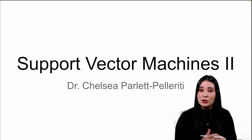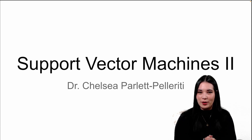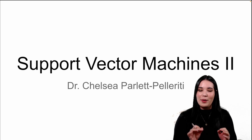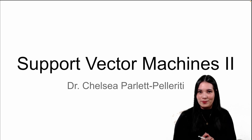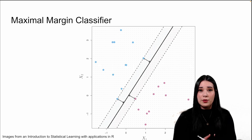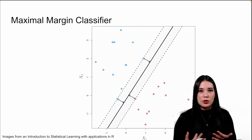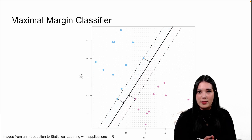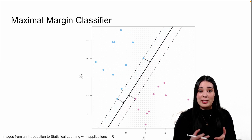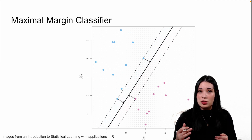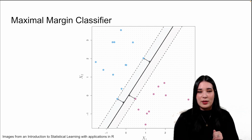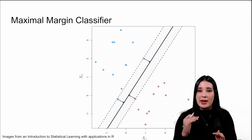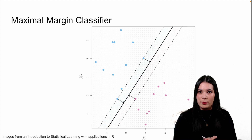Hello and welcome to your second support vector machine lecture where we'll actually get to learn about support vector machines. To review, last time we talked about two models, the first of which was the maximal margin classifier. The maximal margin classifier uses a hyperplane to divide our space into two, having positive cases be on top of the hyperplane and negative cases being below the hyperplane.